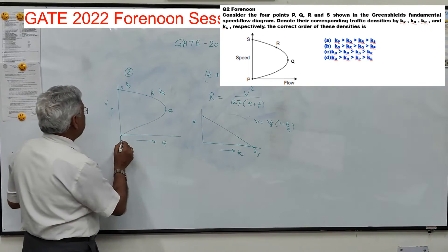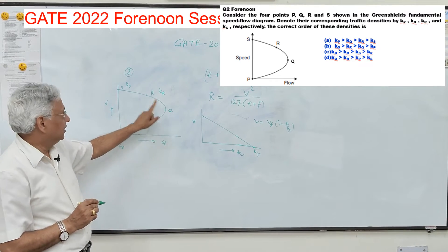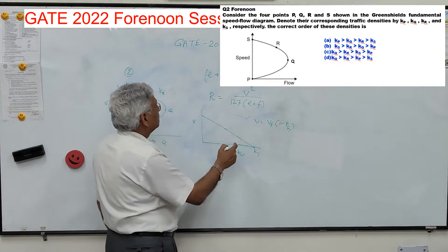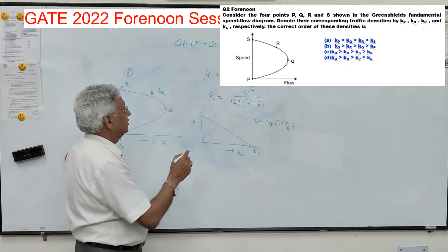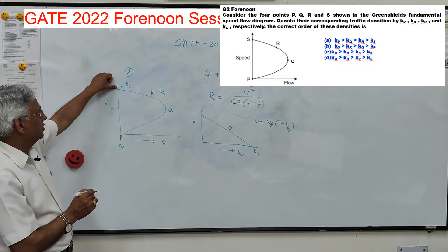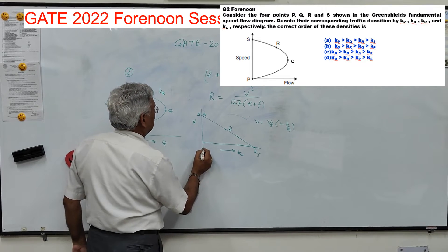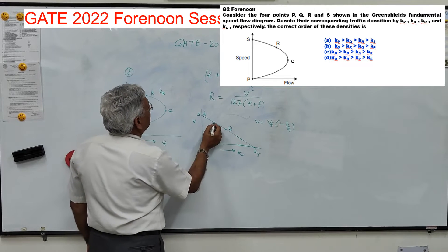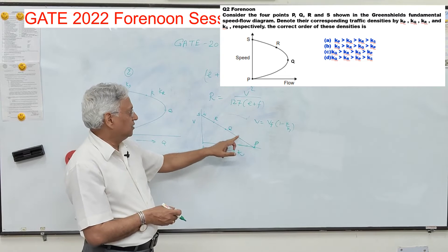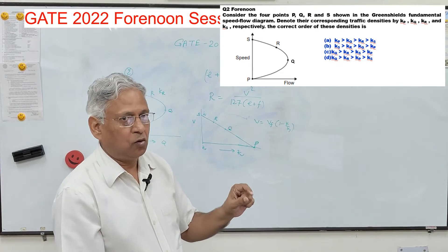Point P corresponds to the jam density, so Kp is the highest density. Point Q corresponds to capacity — maximum flow — and lies at the midpoint of the curve, since maximum flow occurs at half the jam density. Point S is where speed is maximum, so Ks is almost zero. Point R lies between Q and S. Therefore the order is Kp greater than Kq greater than Kr greater than Ks, which is option 1.